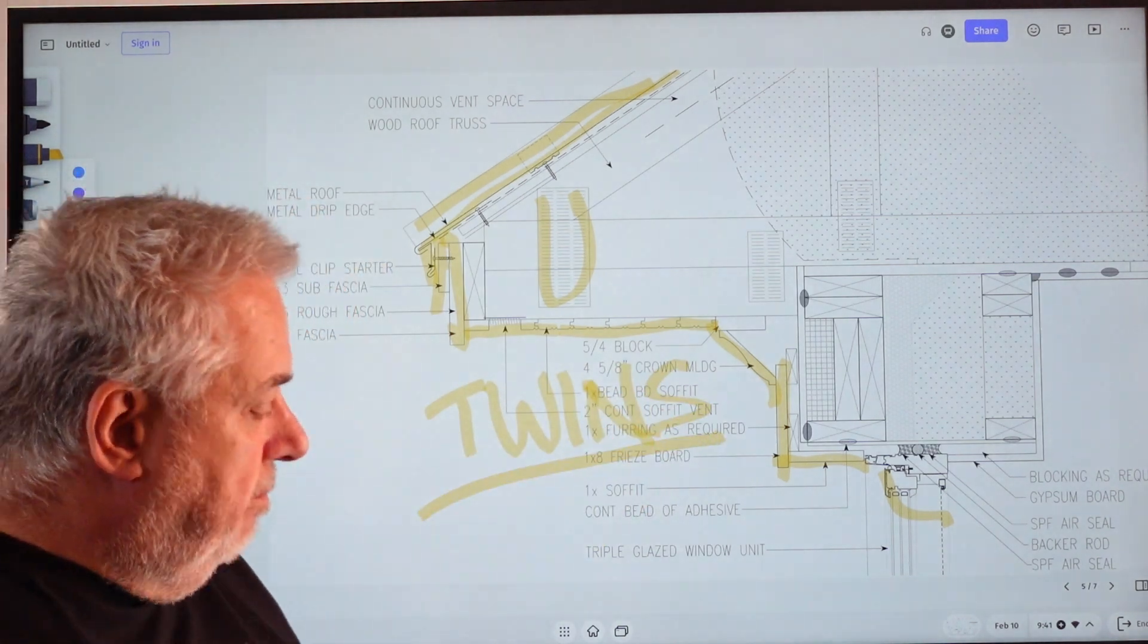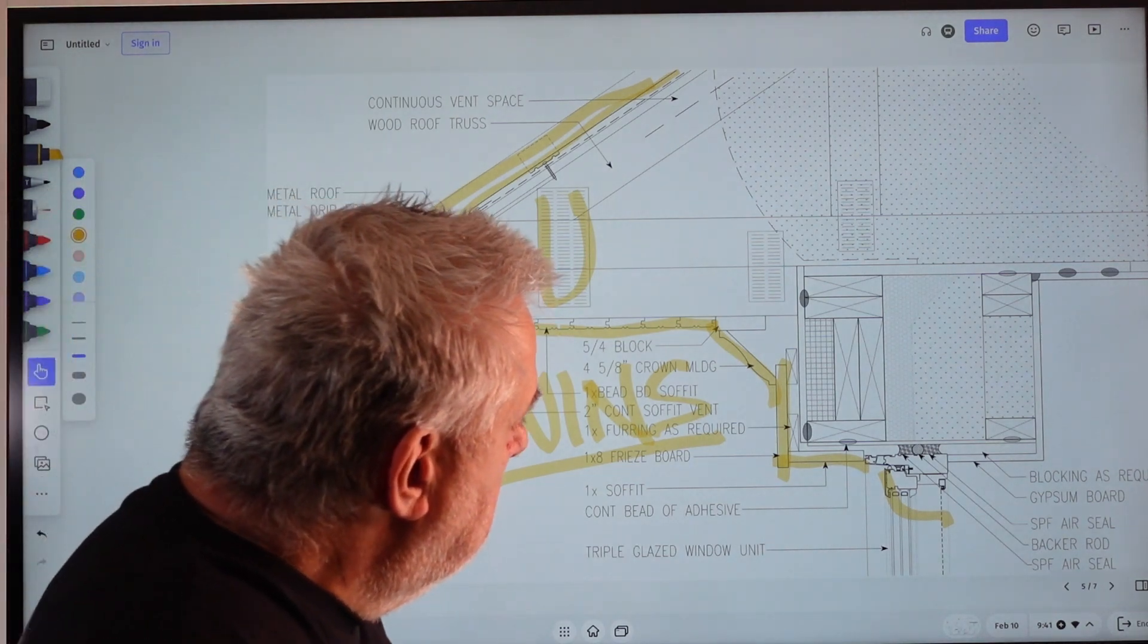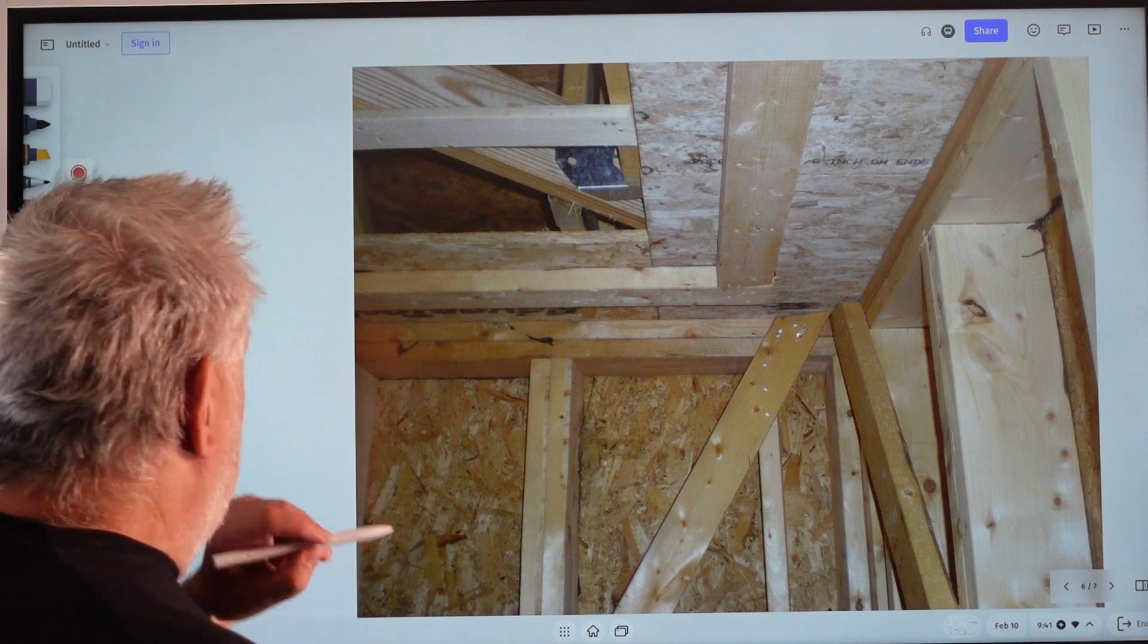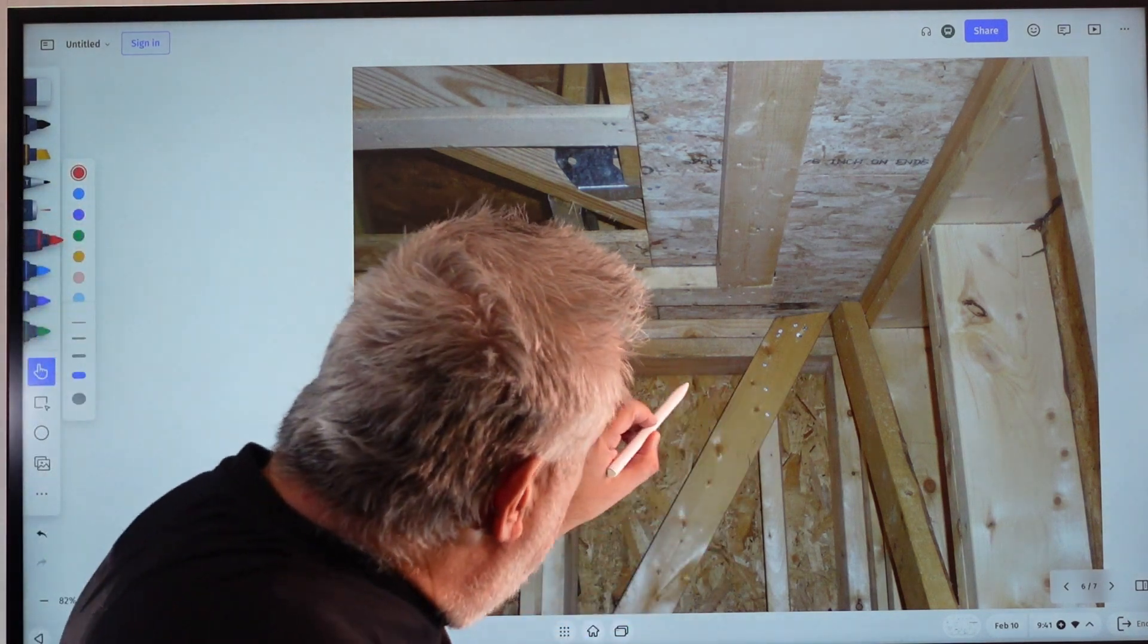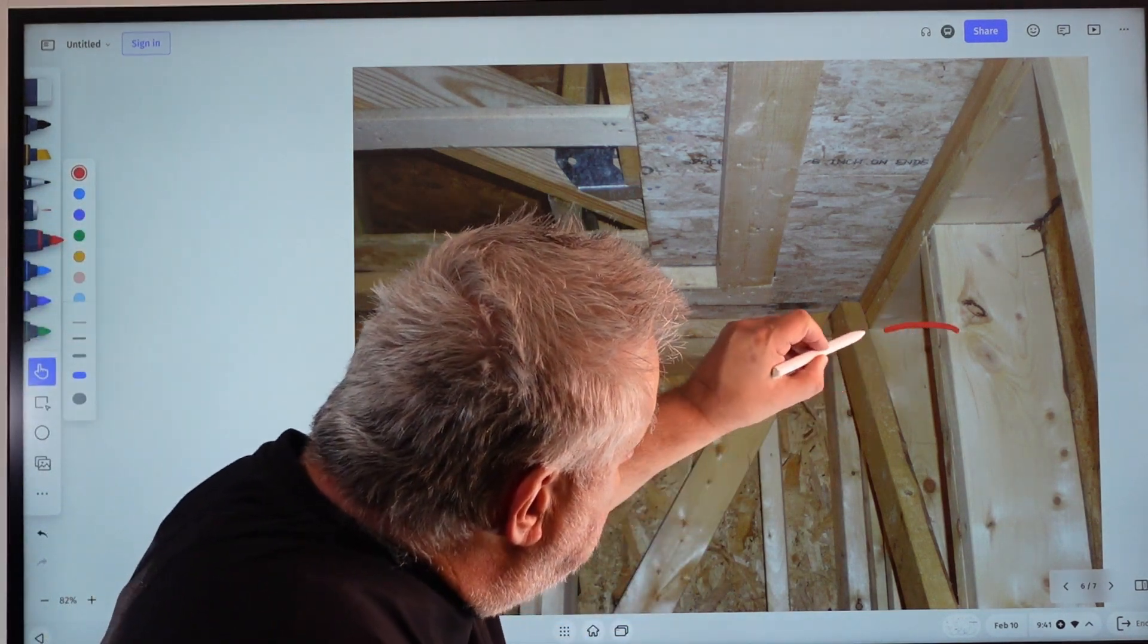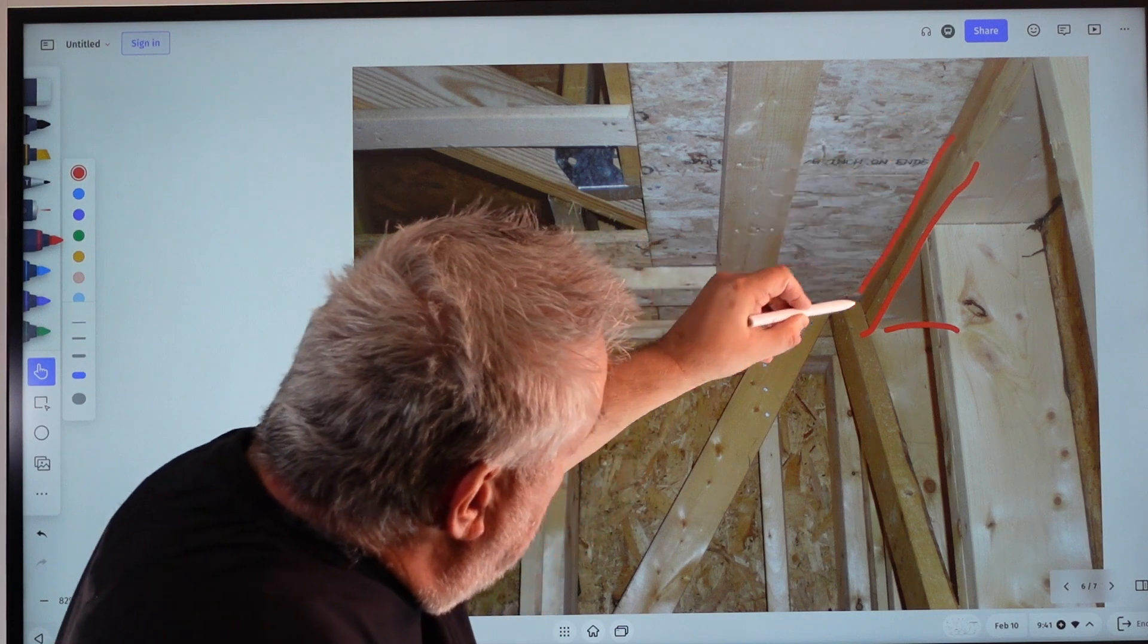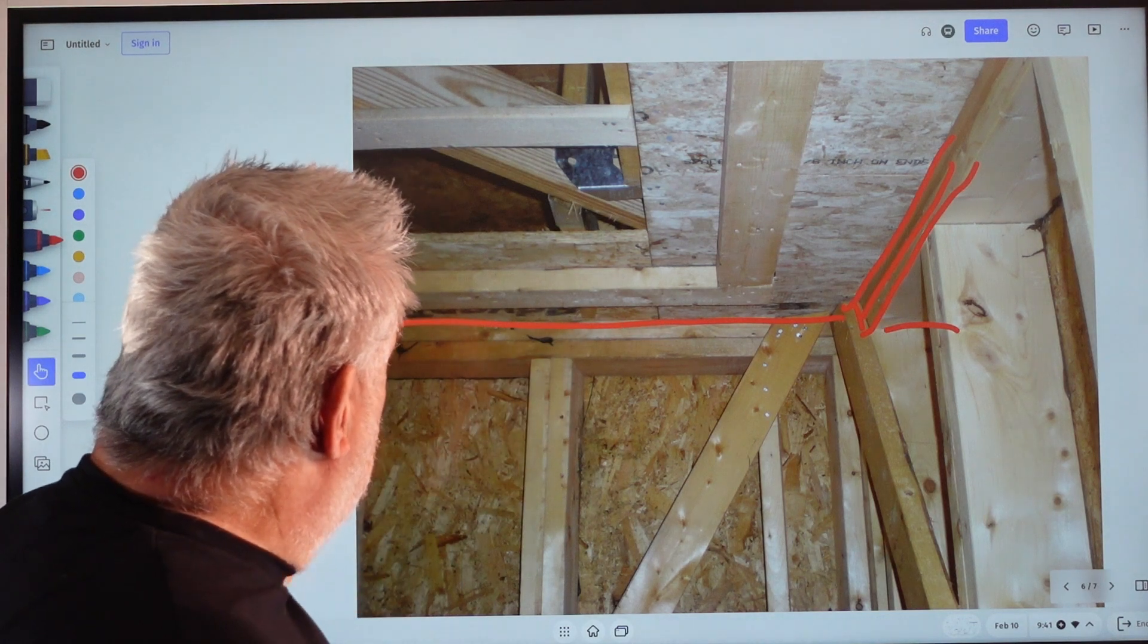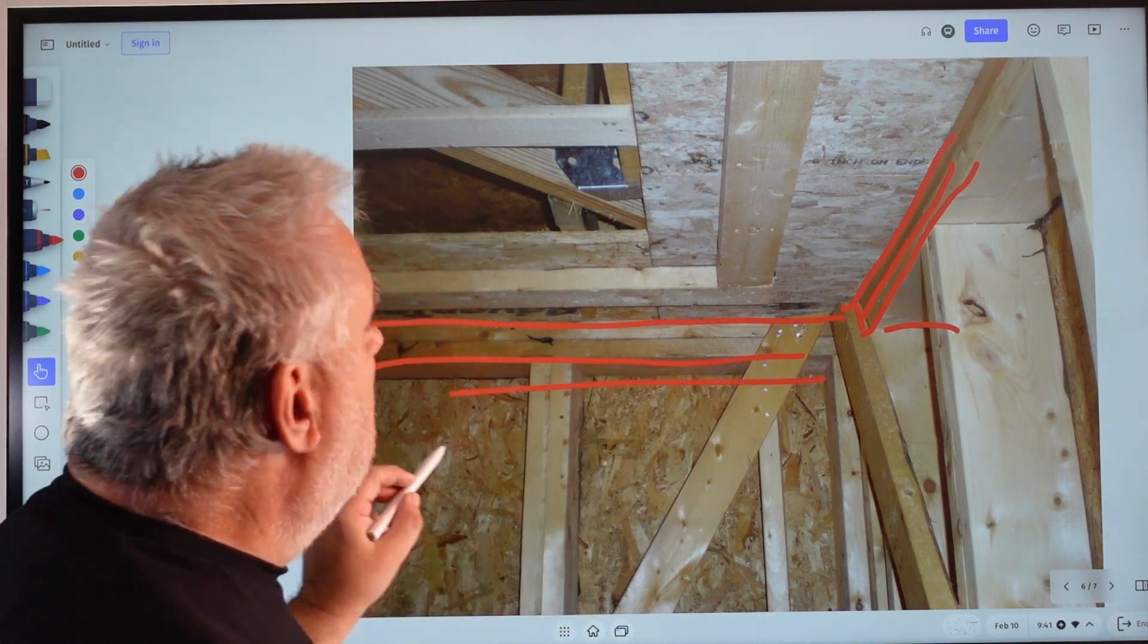So let's take a look at, here's that detail. Here is our two-by-six wall here on the outside. That's our double plate there, and you can see it continues across here.